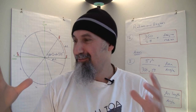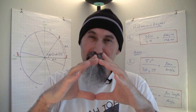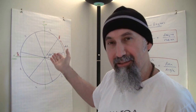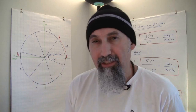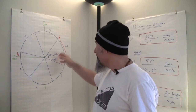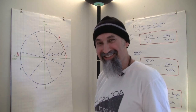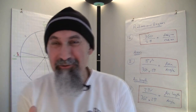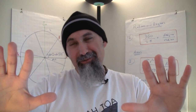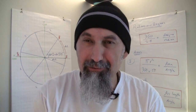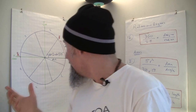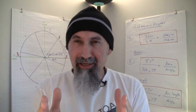Radians simplify our calculations, just like the unit circle does. The ideal circle compares everything to a radius of one, and the radian angle measurement eliminates the need for degrees by standardizing relative to the radius. Once you see what you can do with this simple adjustment — simplifying your interpretation and working with the system — it's pretty elegant.